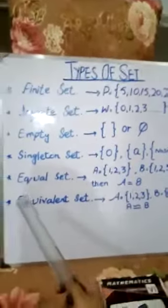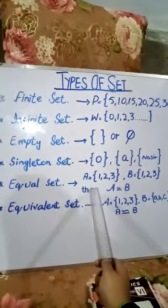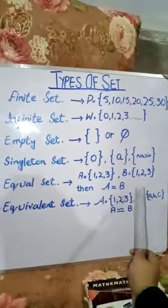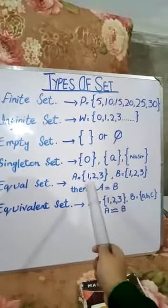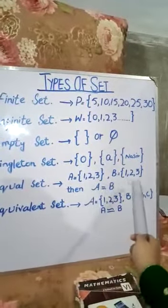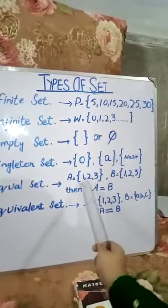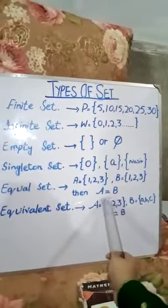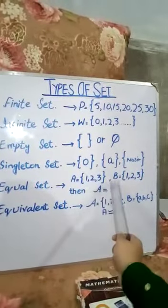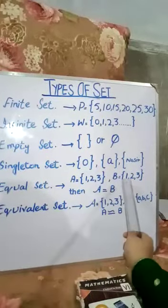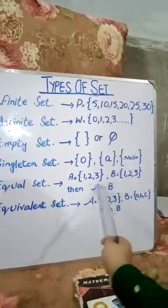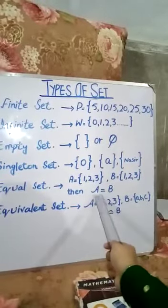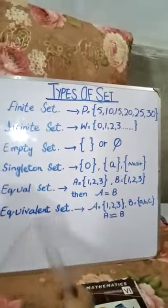Now, the next definition: equal set. Two sets A and B are said to be equal if they have the same elements, denoted as A = B. For example, A = {1, 2, 3} and B = {1, 2, 3}. They are equal, so we write A = B.